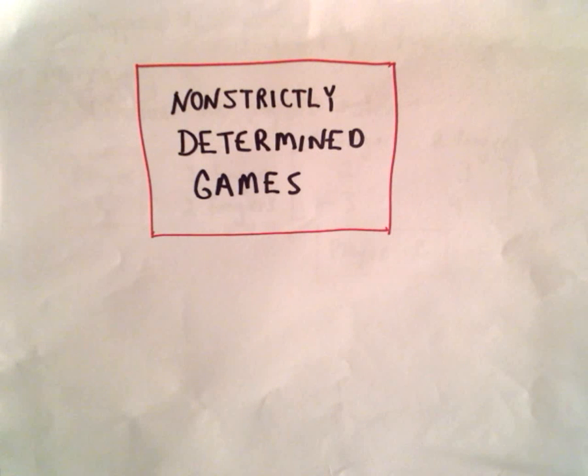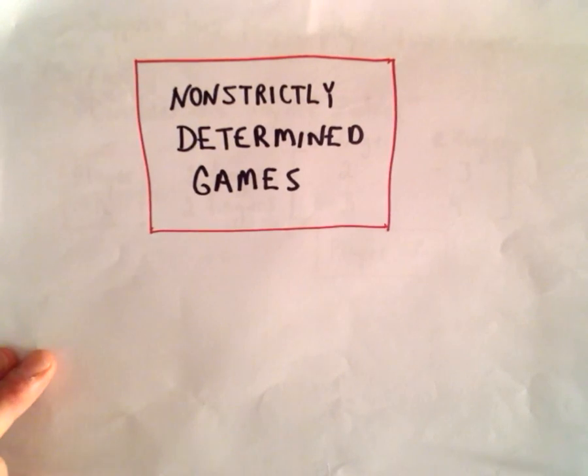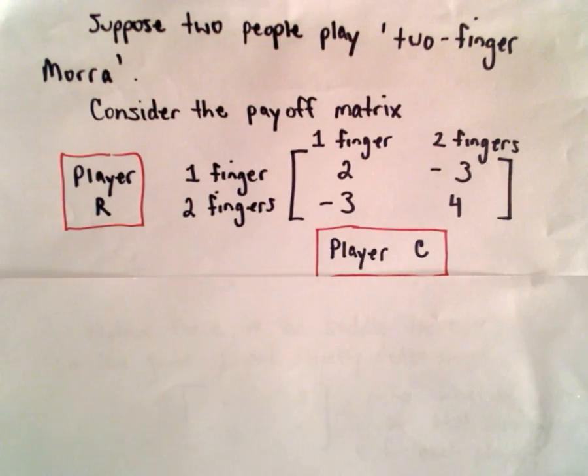Okay, here we're going to start looking at the more interesting aspects of game theory. And what we're going to look at are what are known as non-strictly determined games. So nothing super heavy in this one, just kind of some terminology, some observations, and some thoughts.